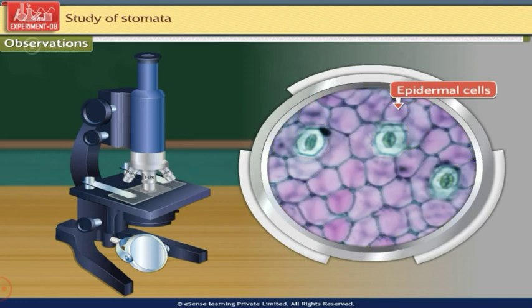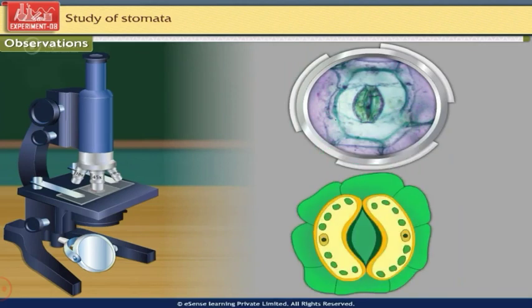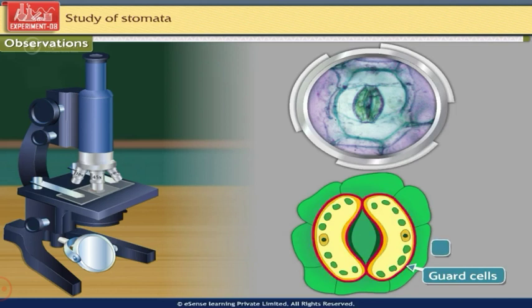Many small pores called stomata are seen scattered among the epidermal cells. Each stoma is guarded by two kidney-shaped guard cells, each containing chloroplasts and a nucleus.